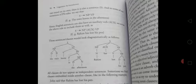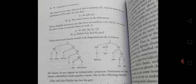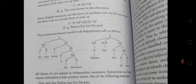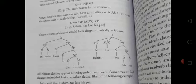Since English sentences can also have auxiliary verbs, we revise the above rule to include them as well. For example: 'Rahim has lost his pen.' Here, 'Rahim' is the noun phrase, 'has' is the auxiliary, and 'lost his pen' is the verb phrase. These sentences and clauses would look diagrammatically as follows.